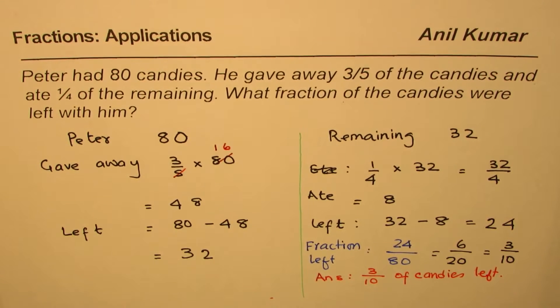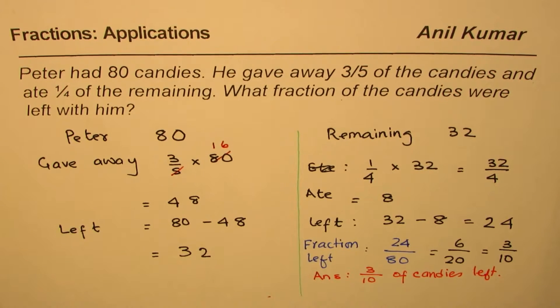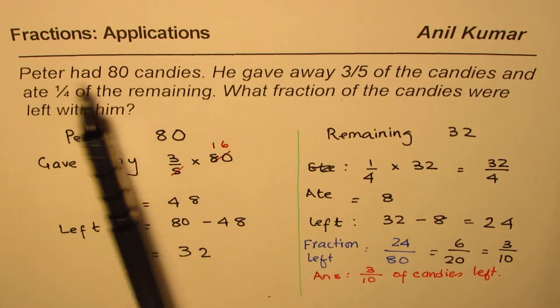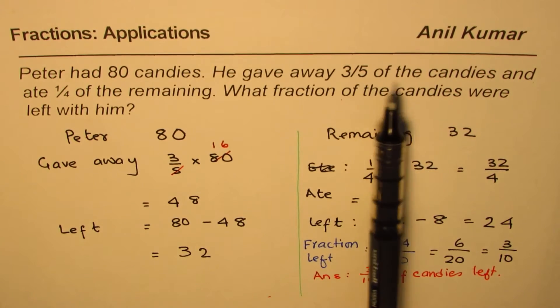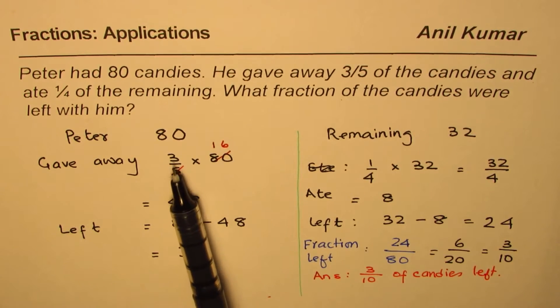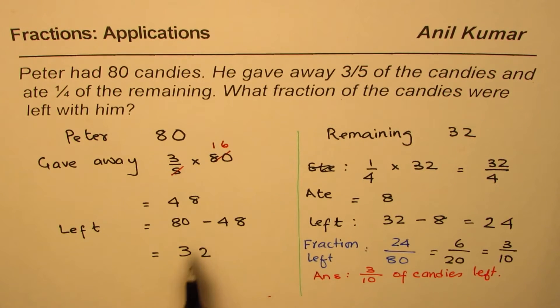I'd like you to go through this video once again, so that you understand what we did. Peter had 80 candies. He gave away 3/5 of the candies. So 3/5 of 80, which was 48. He gave away 48. So with him, 80 minus 48, 32 are left.